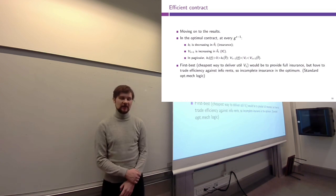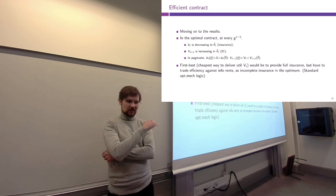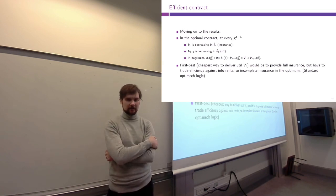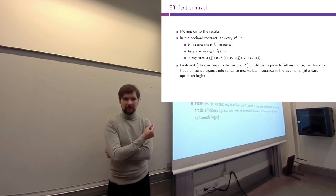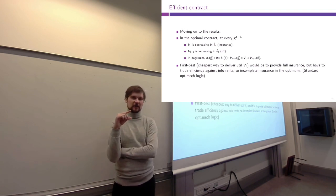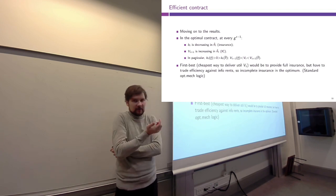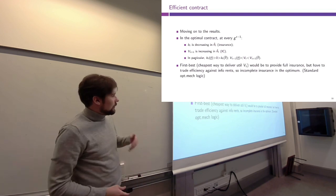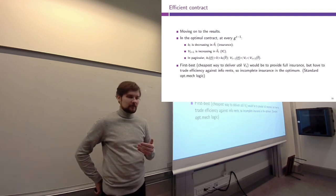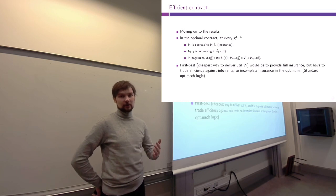However, using variation in future utility to provide incentives goes against our goal. Recall that the best way to insure the agent is to give them constant utility over their lifetime. By using variation in future utility to create incentives today, we depart from perfect insurance — the agent's future utility becomes dependent on what they report today, so they are no longer perfectly insured. But we can find a middle ground: some partial insurance that strictly improves the agent's well-being compared to no insurance whatsoever.